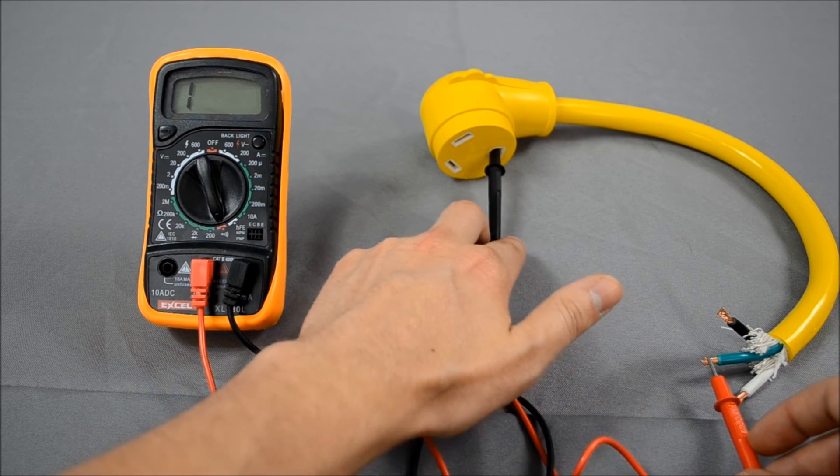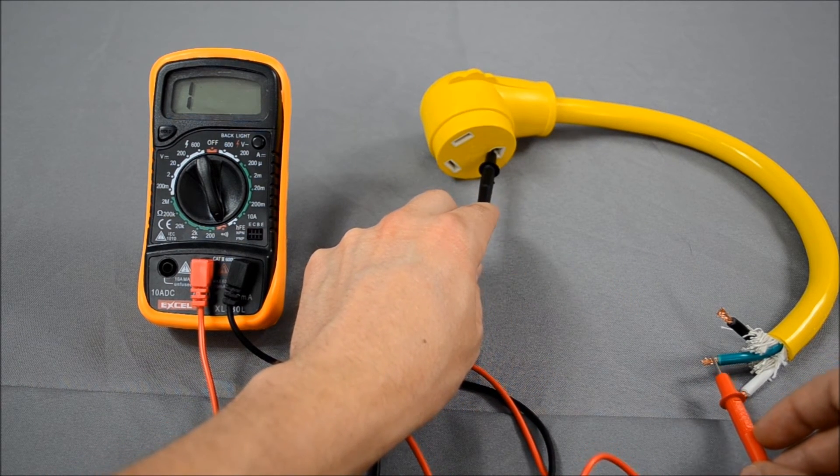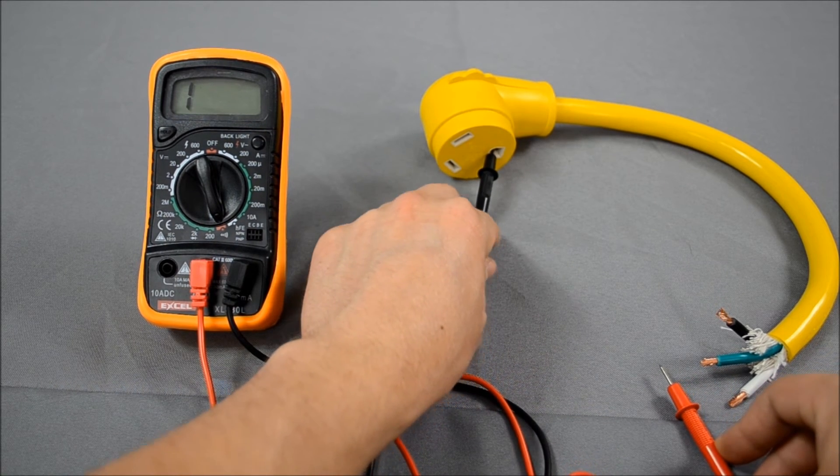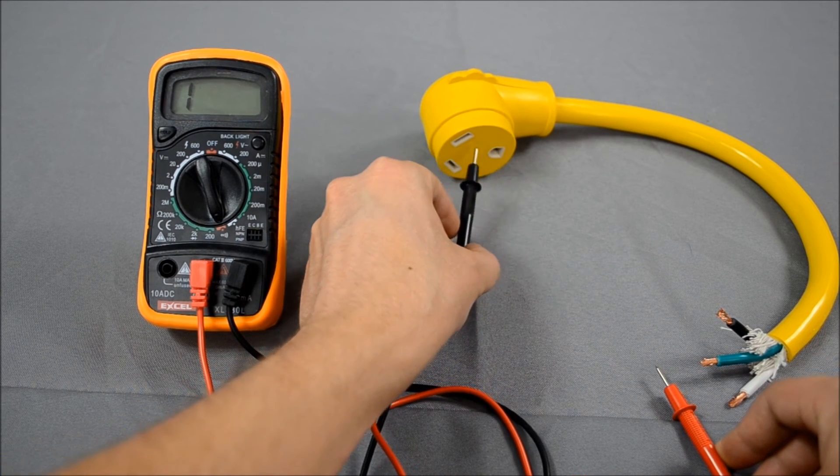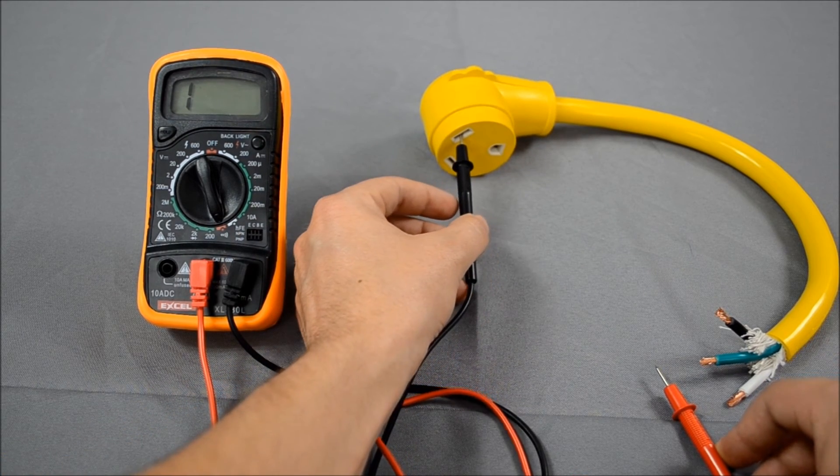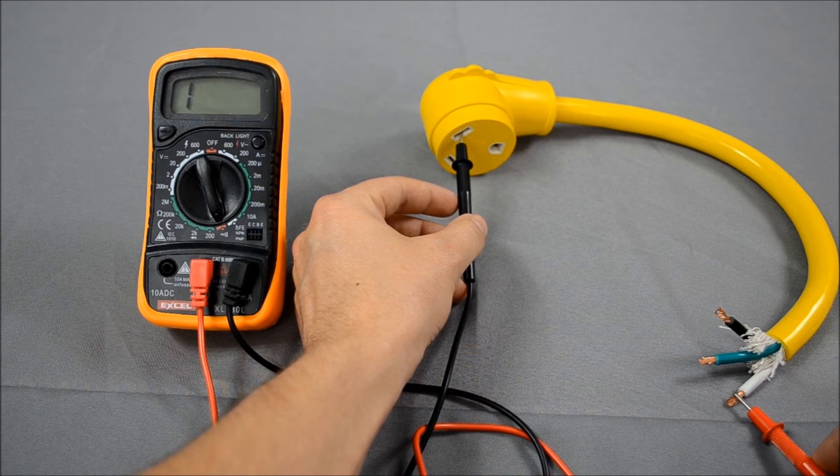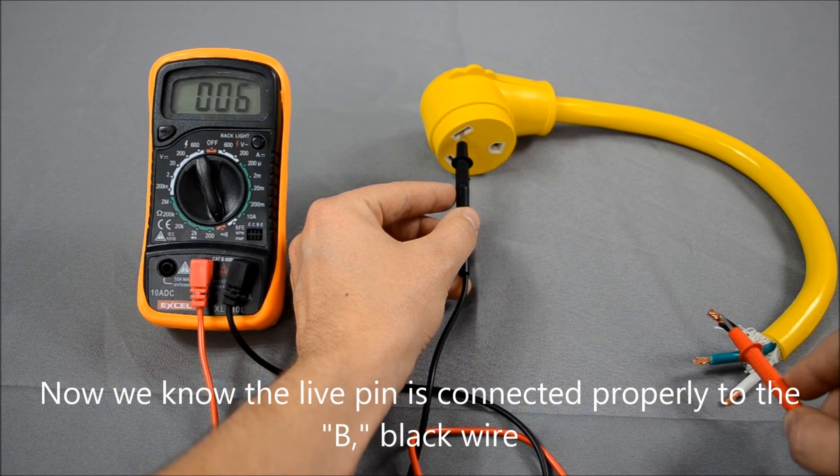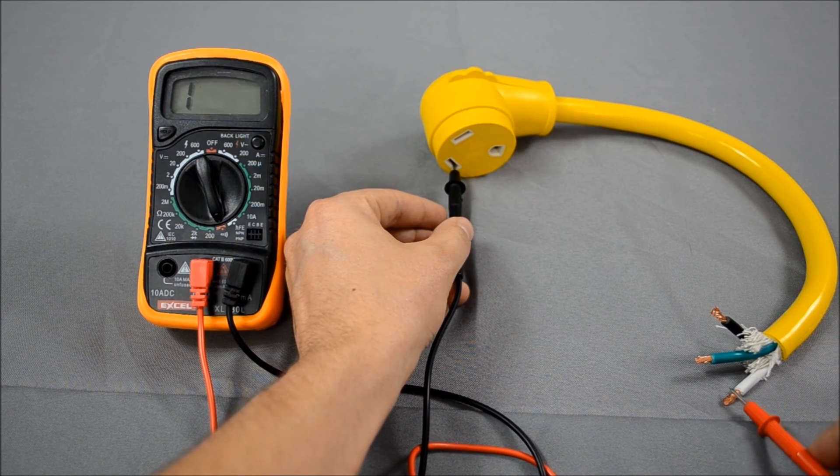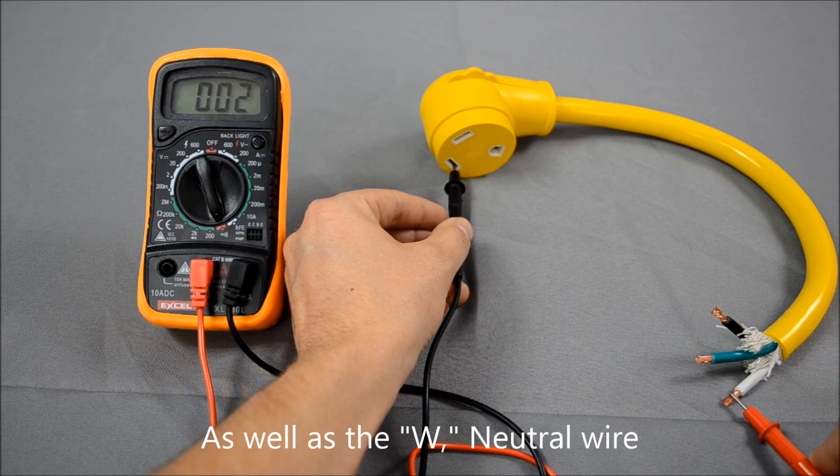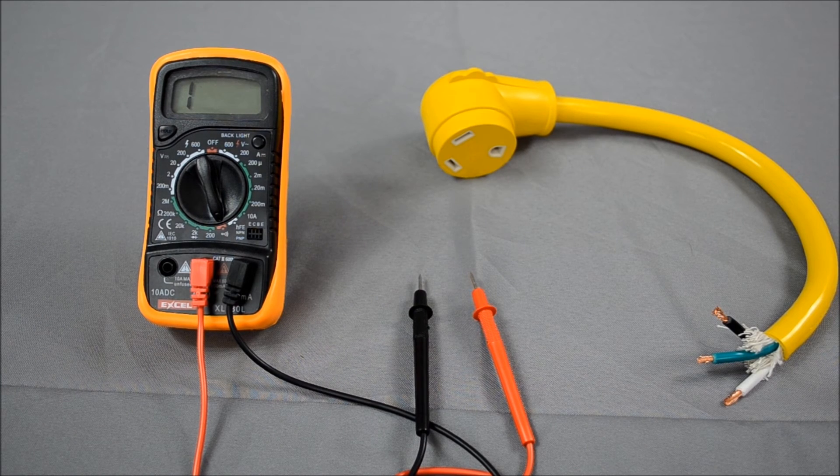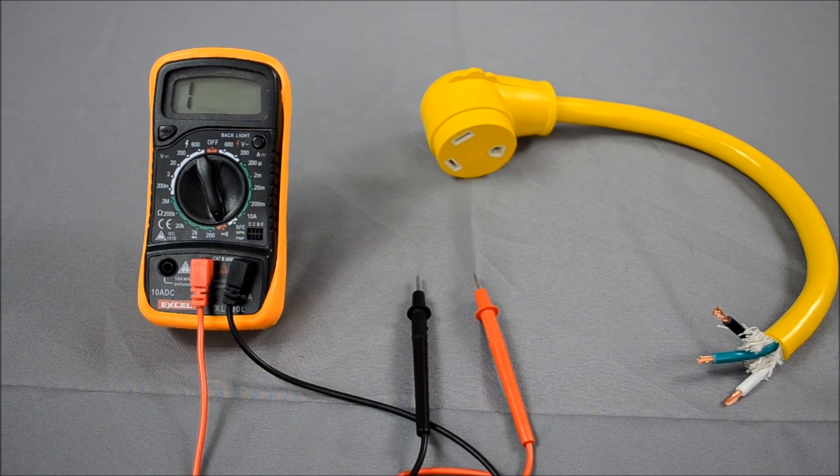Now we're going to do that again for the live pins as well as the neutral. Nope, not that one—there we go. And then the last one—perfect. Now we know exactly which cable runs to which, and we know whether or not we have it wired correctly.